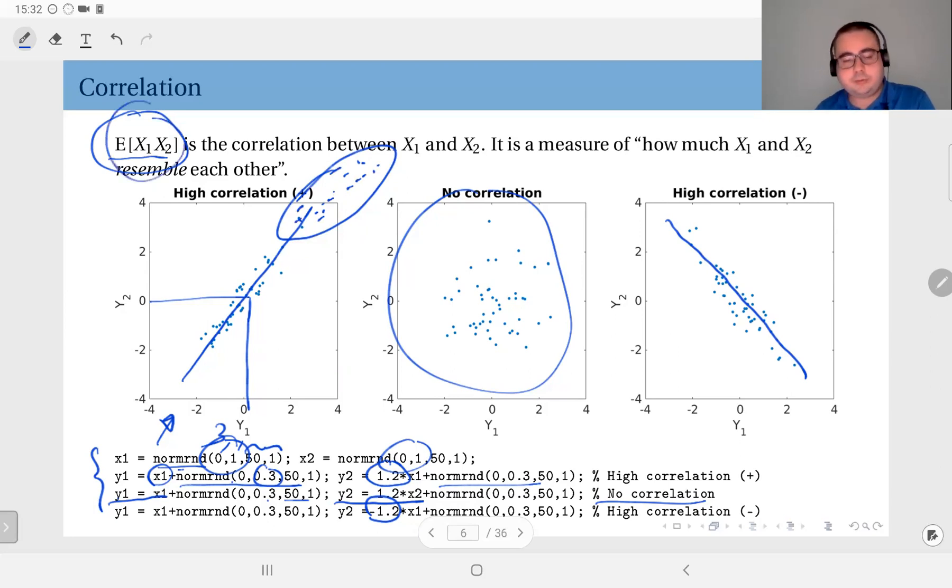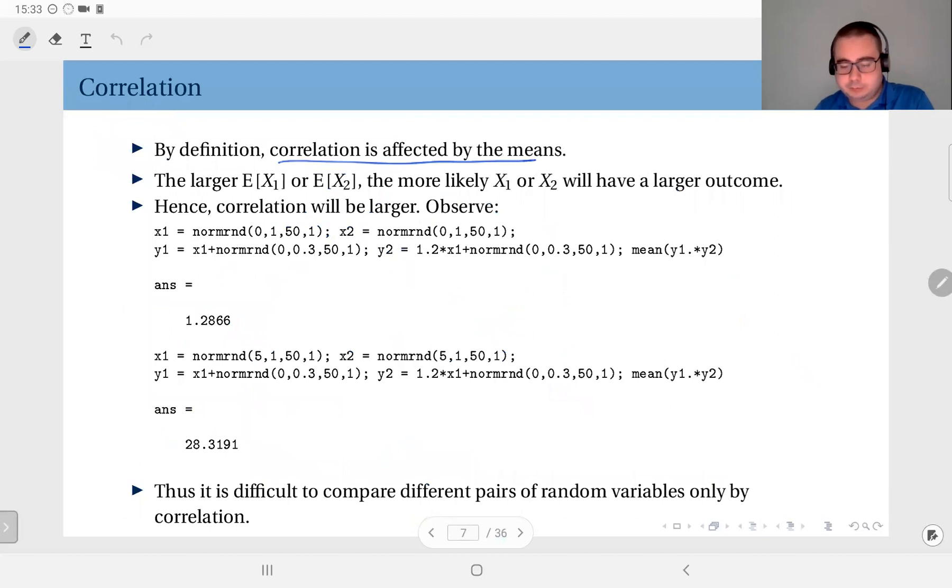And since correlation is by definition the mean of the products, I would have naturally larger values here. Larger values here. Therefore, the correlation here, even if the only difference is a shifted mean, the correlation between these two and these two would differ quite a lot due to the absolute values. Therefore, the larger the expected values, the more likely each of the random variables have larger outcomes.